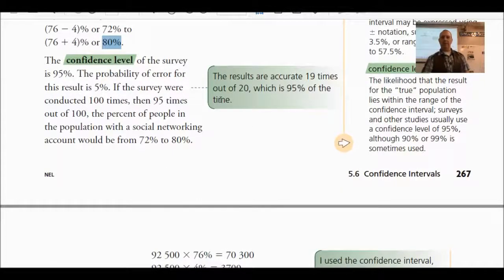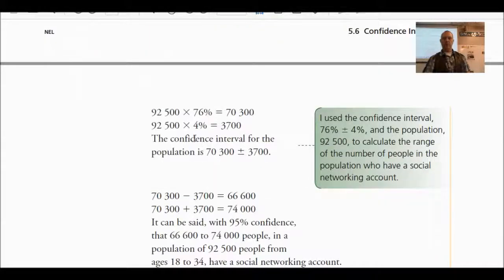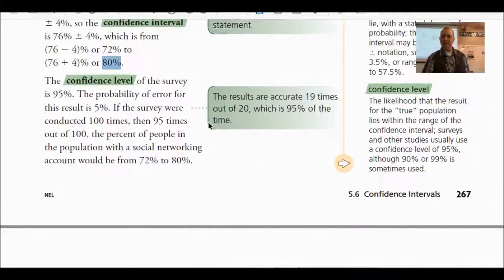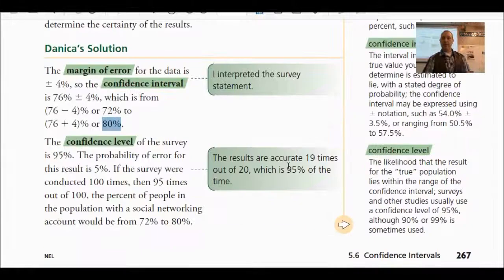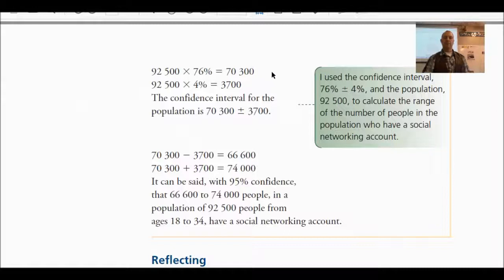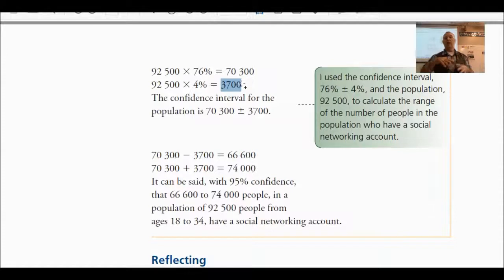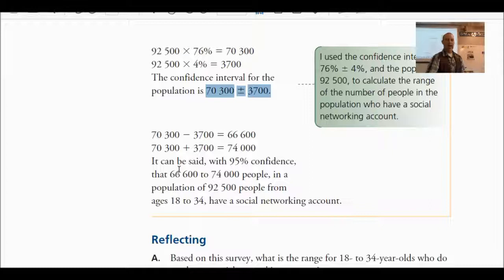So let's continue. If 92,500 is the entire population and 600 were sampled, then 76% of those would probably have a networking account — that's 70,300. The margin of error is actually about 3,700 people. So the confidence interval is 66,600 to 74,000. There's a 95% confidence that the actual number is between 66,600 and 74,000 people.